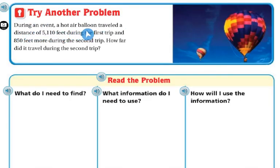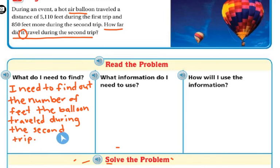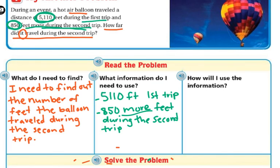Let's try another problem. During an event, a hot air balloon traveled a distance of 5,110 feet during the first trip and 850 feet more during the second trip. How far did it travel during the second trip? I need to find out the number of feet the balloon traveled during the second trip. I need to know the distance during the first trip was 5,110 feet, and it was 850 more feet during the second trip. So it's 5,110 feet plus 850 more feet.